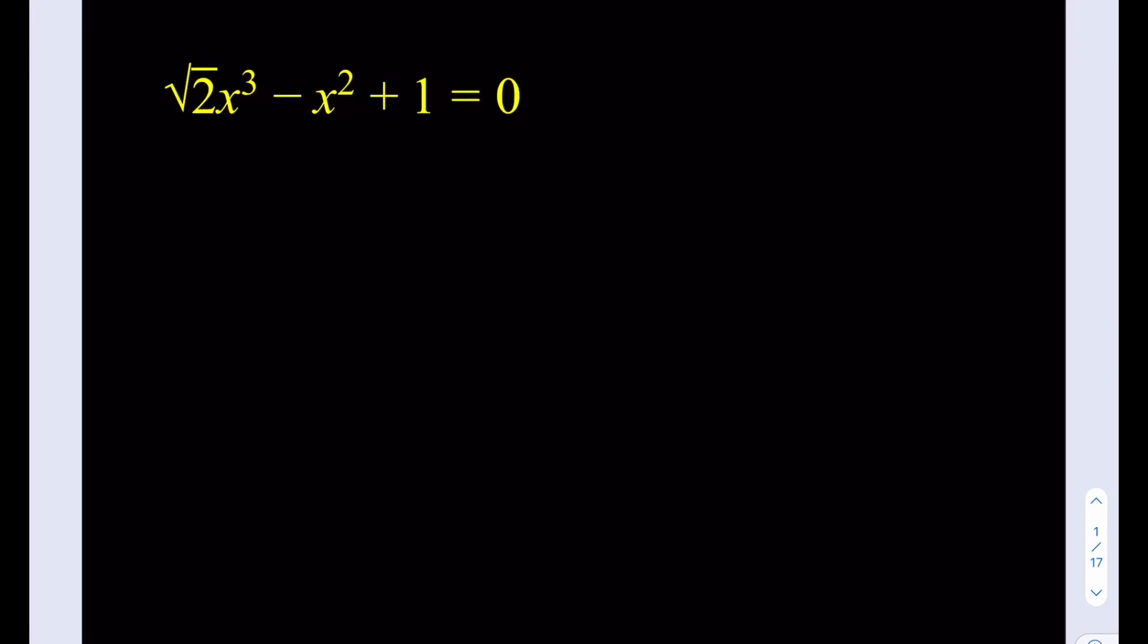Okay, so we do have a cubic equation, square root of 2x cubed minus x squared plus 1 is equal to 0. So let's notice a couple of things. We don't have the x term, so that's not always a good thing, but we just don't have it.